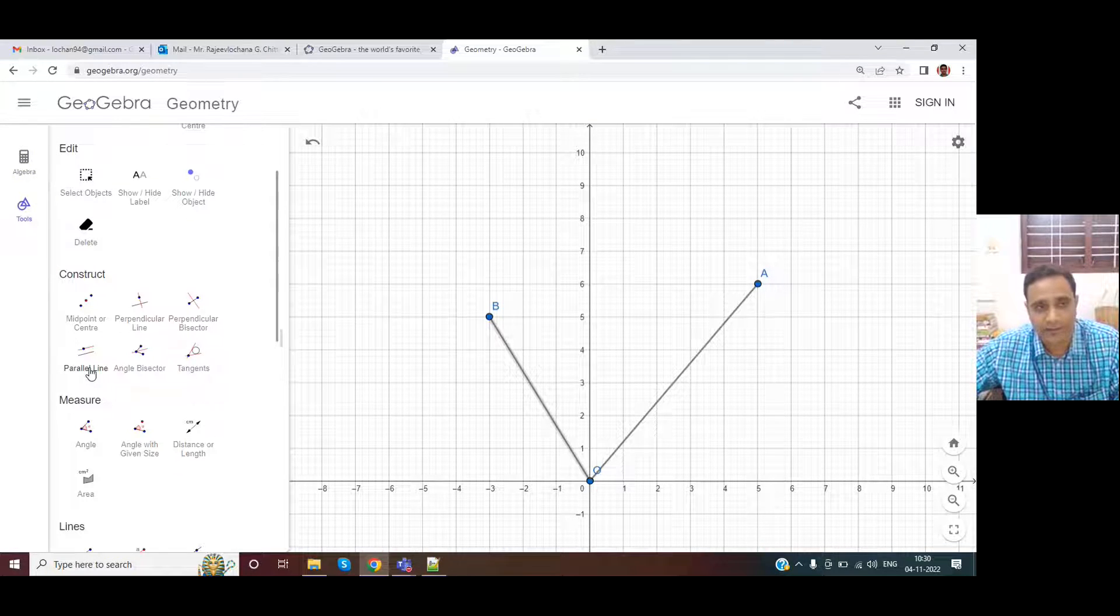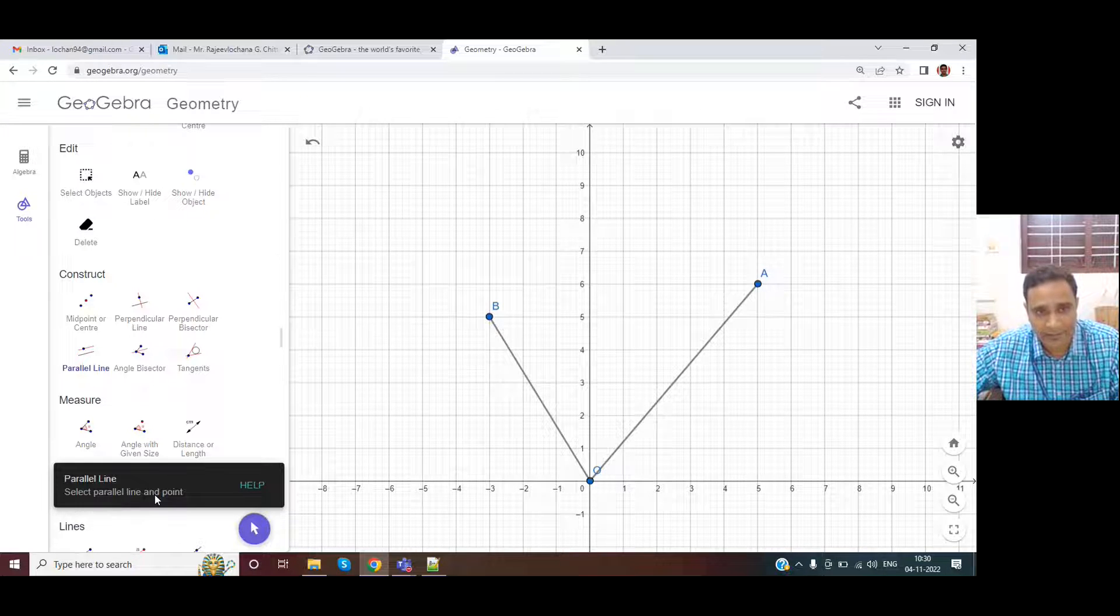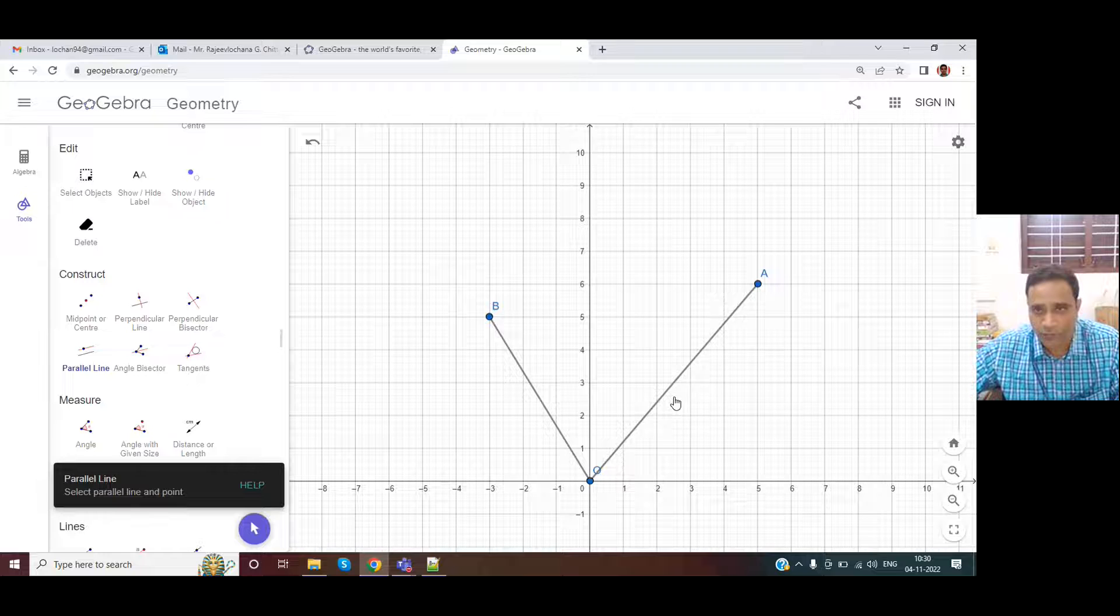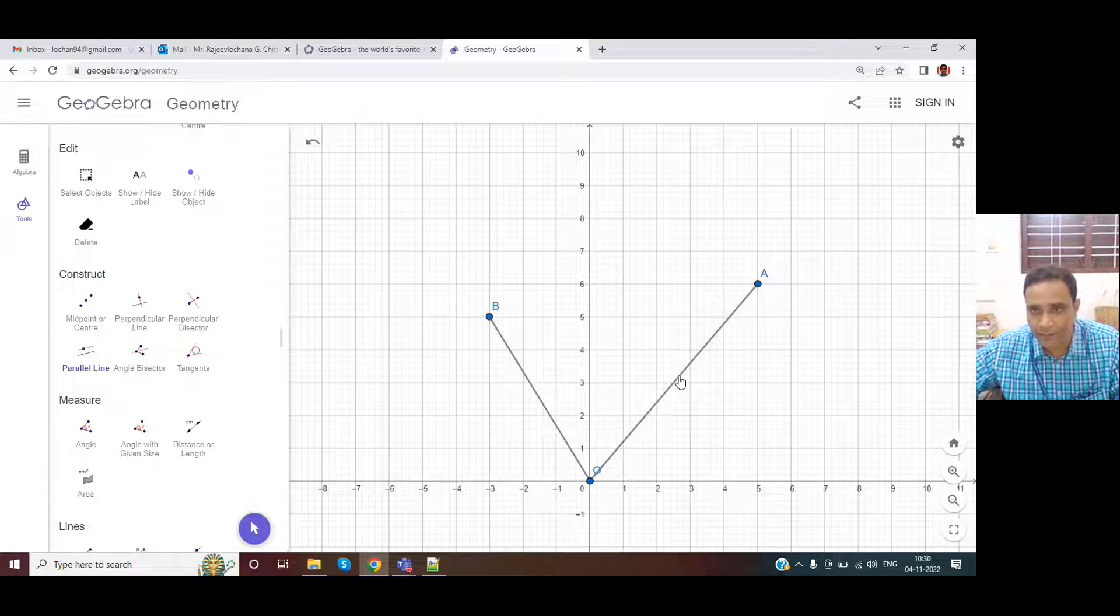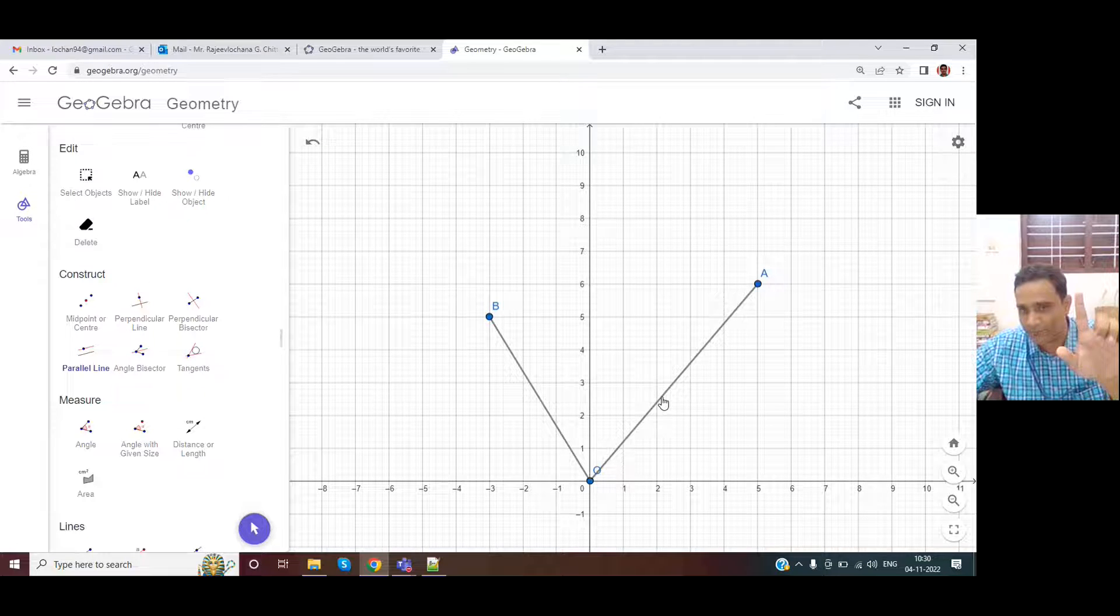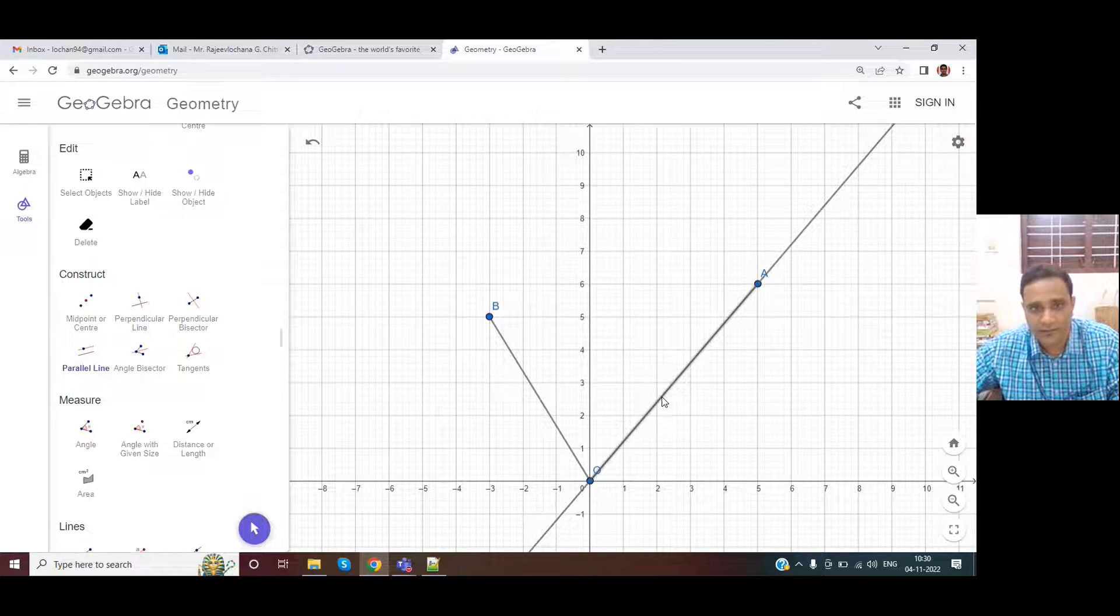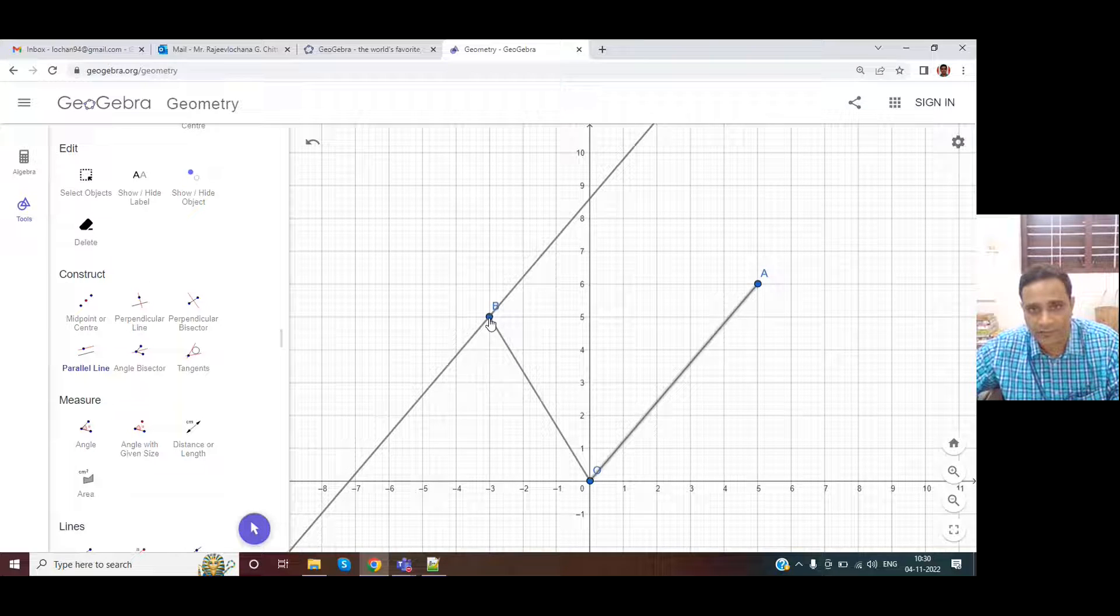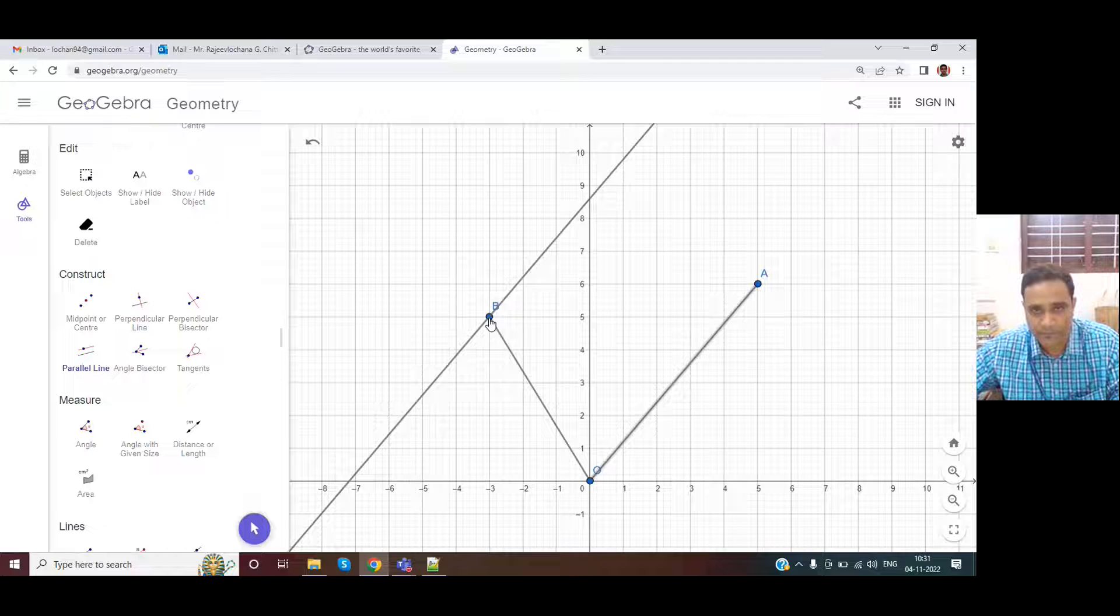So using the tools, let us look at this parallel line command. If I select this parallel line, it says select parallel line and a point. So we want a line parallel to this OA. So please select anywhere when the hand symbol comes. And in what direction? So it has to pass through point B. Okay, so that is the parallel line. So we have drawn.